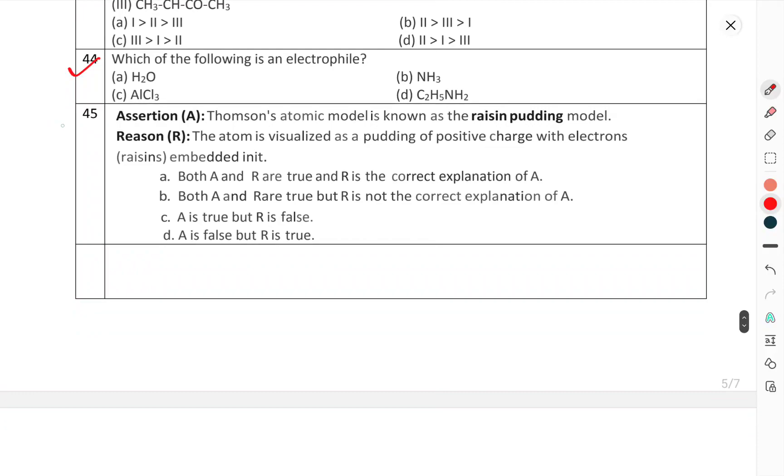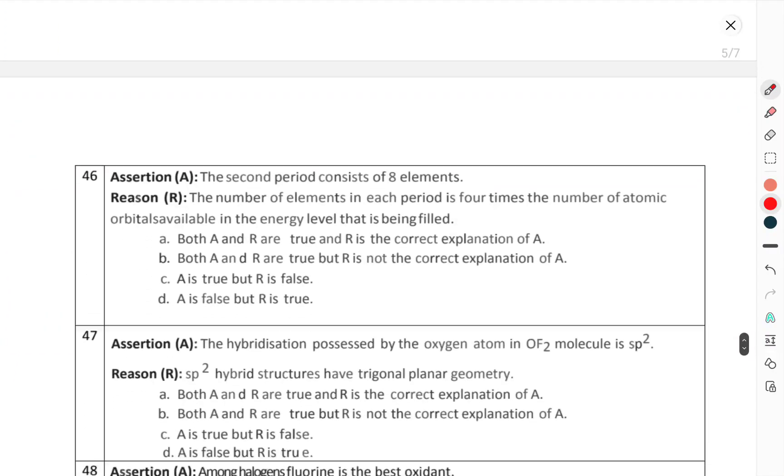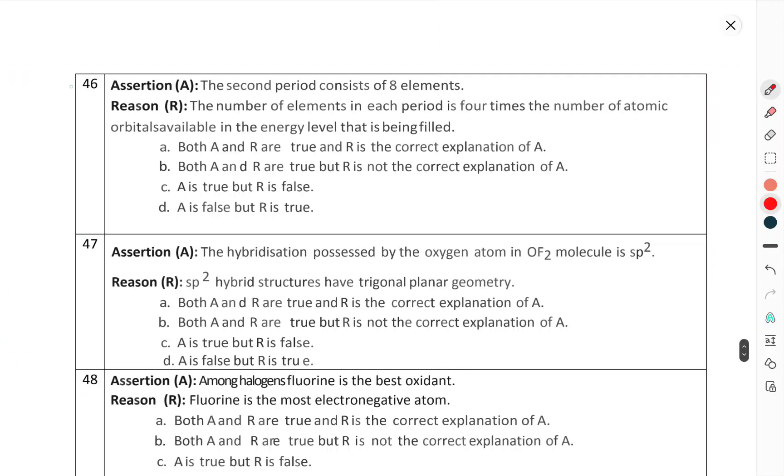Question number 45, assertion-reason based question: Assertion - Thomson's atomic model is known as the raisin pudding model. Reason - The atoms are visualized as a pudding of positive charge with electrons embedded in it. Question number 46: Assertion - The second period consists of eight elements.